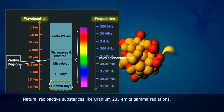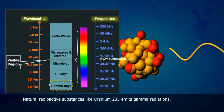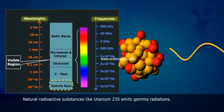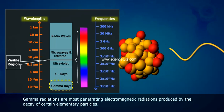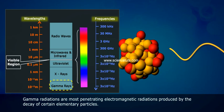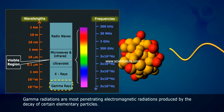Natural radioactive substances like uranium-235 emit gamma radiations. Gamma radiations are the most penetrating electromagnetic radiations, produced by the decay of certain elementary particles.